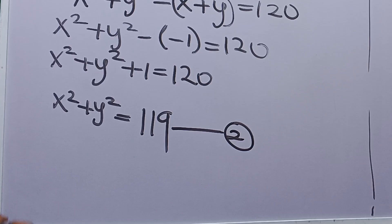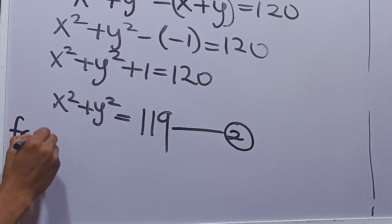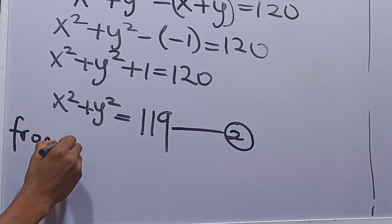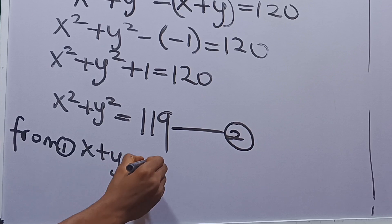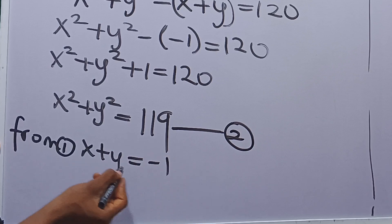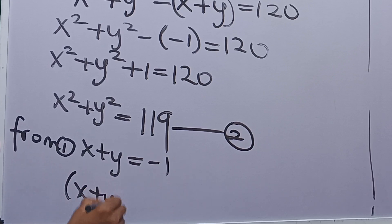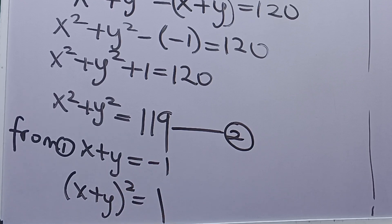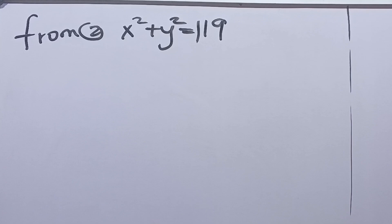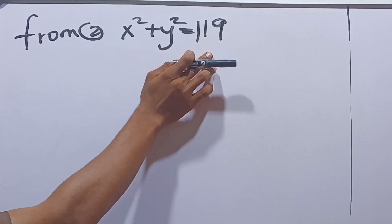Moving on, recall that from our result, x plus y is equal to negative 1. If we square this, we have x plus y squared is equal to negative 1 times negative 1, which is positive 1. So x squared plus y squared is equal to 119 and x plus y squared is equal to 1.